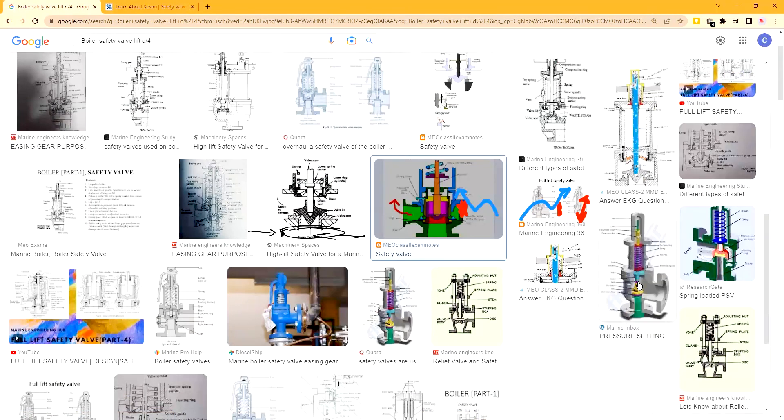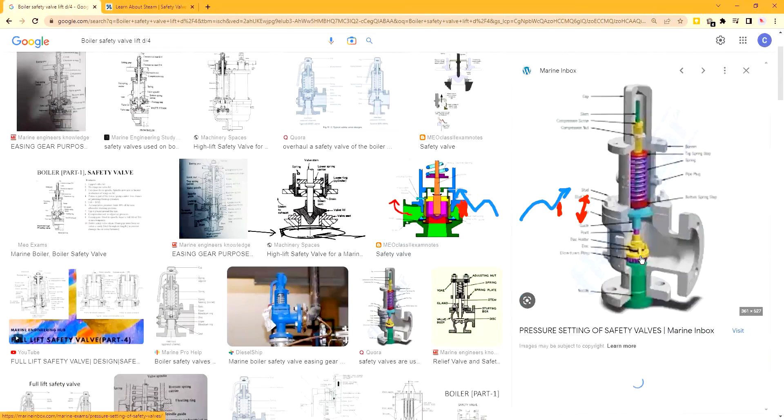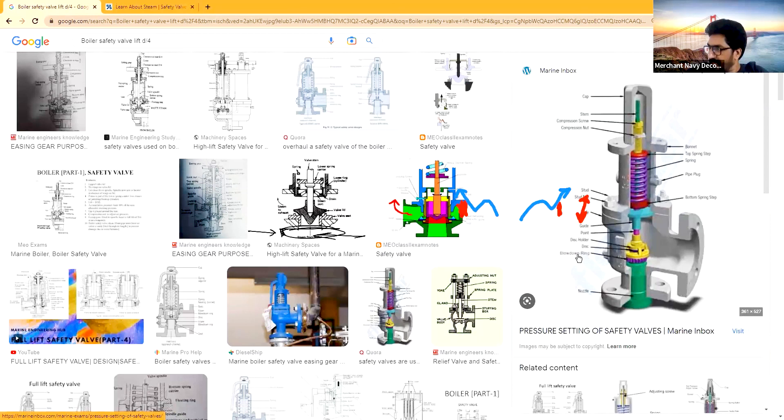You can see here it's written blow-down ring. This is that ring and you can turn it. There is a window here. You open the window on the side and you can turn this with a screwdriver clockwise or anti-clockwise, and then you can move it up and down. So that will change your blow-down pressure.